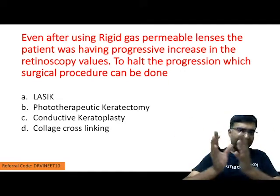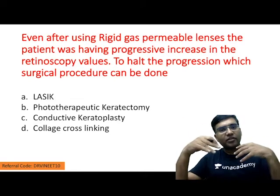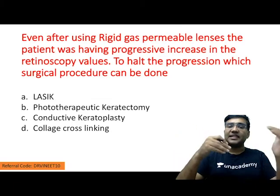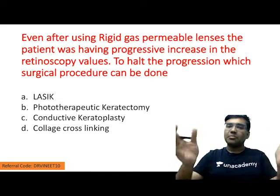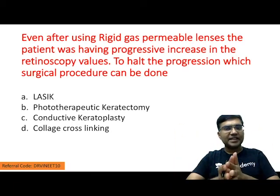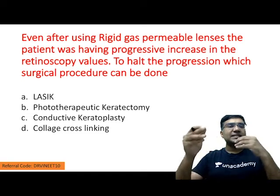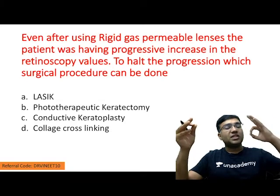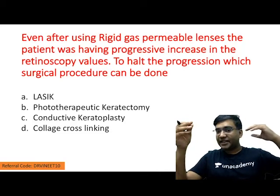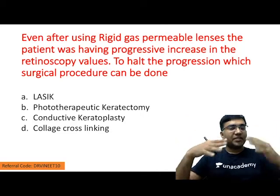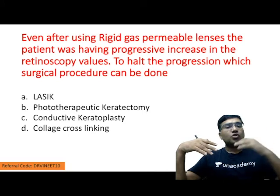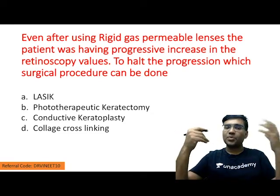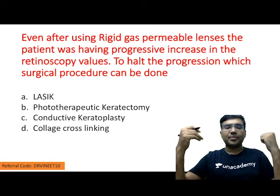What is the treatment of keratoconus? First we give spectacles. If the patient is not comfortable with spectacles, we give RGP (rigid gas permeable) lenses. But if there is still progressive increase in the retinoscopy value, this means corneal thinning is increasing and the curvature is changing. The options are LASIK, phototherapeutic keratectomy, conductive keratoplasty, or collagen cross-linking.